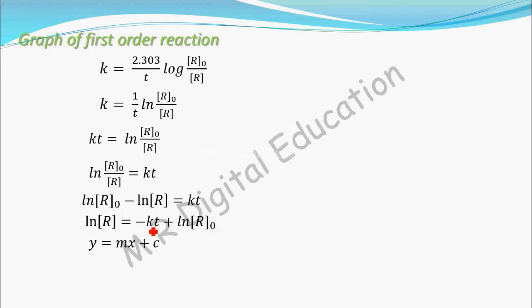So this equation is almost same as y equals mx plus c, but the thing is here the slope is negative, that is minus k. And you draw the graph of ln [R] versus time.